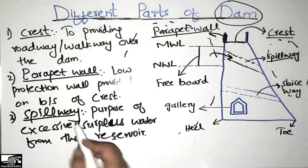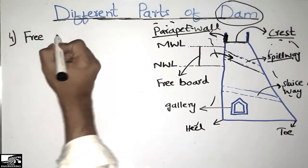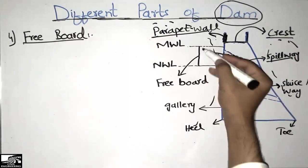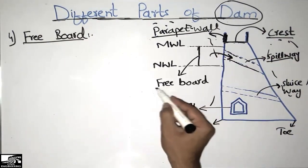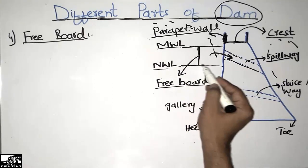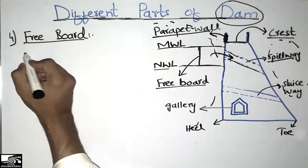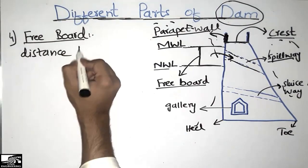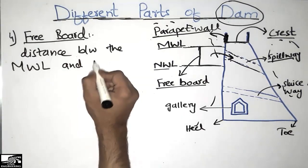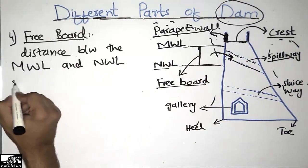The fourth part of the dam is the free board. Free board is defined as the distance between the maximum water level and the normal water level of the dam. This distance between the maximum and normal water level is called the free board.